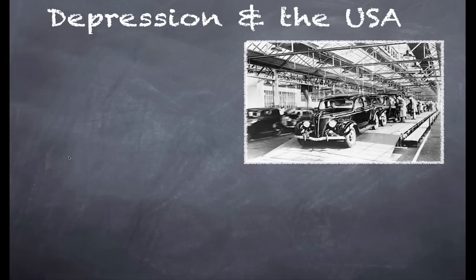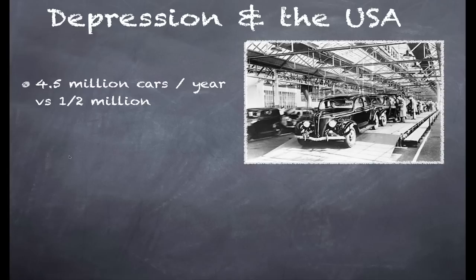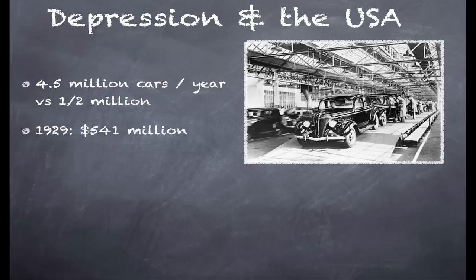Let's have a look at the effect on the United States. In 1928, the year before the Depression, the United States produced 4.5 million cars for export — compared with half a million cars for the entire Western European output combined. In 1929, the value of US car exports was worth over half a billion dollars. By 1932, that had fallen to only 76 million dollars. You can see the collapse in international trade.